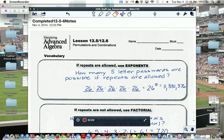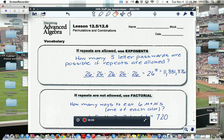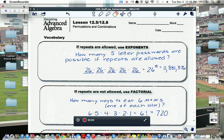The 12.5, 12.6 lecture starts out talking about what's called permutations and combinations. If repeats are allowed, you could use exponents. For example, how many five letter passwords are possible if repeats are allowed?